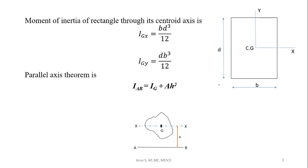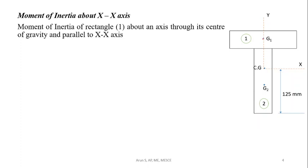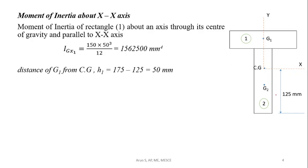First, we will find out the moment of inertia about the X-axis. The moment of inertia of rectangle 1 about the axis through its centre of gravity and parallel to the X-axis is bd³/12. That is, 150 × 50³ / 12, which gives 1,562,500 mm⁴.